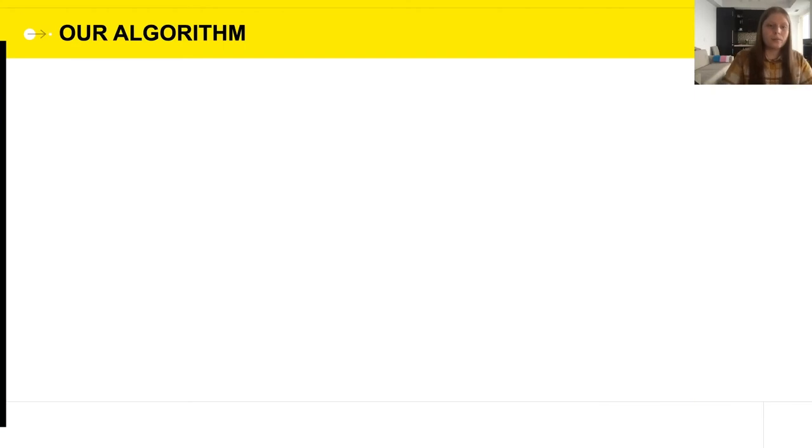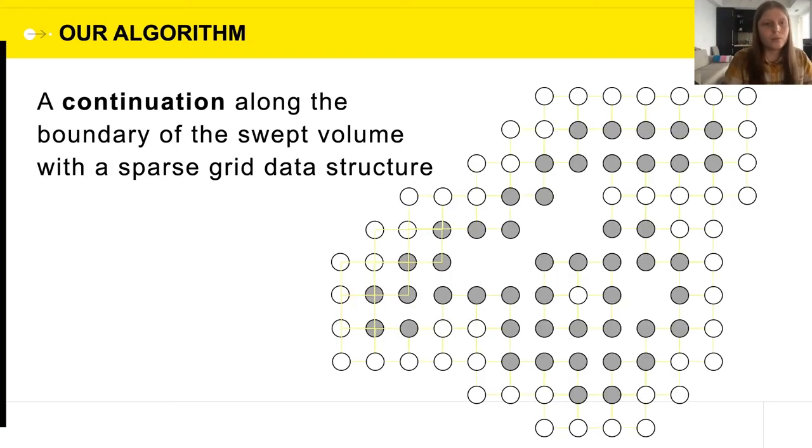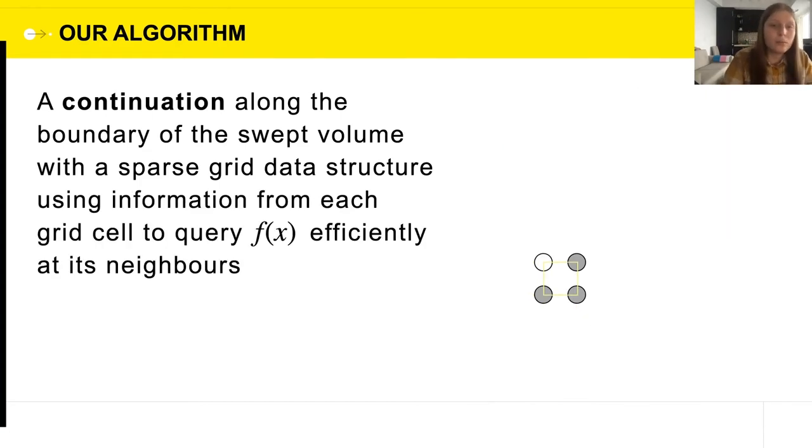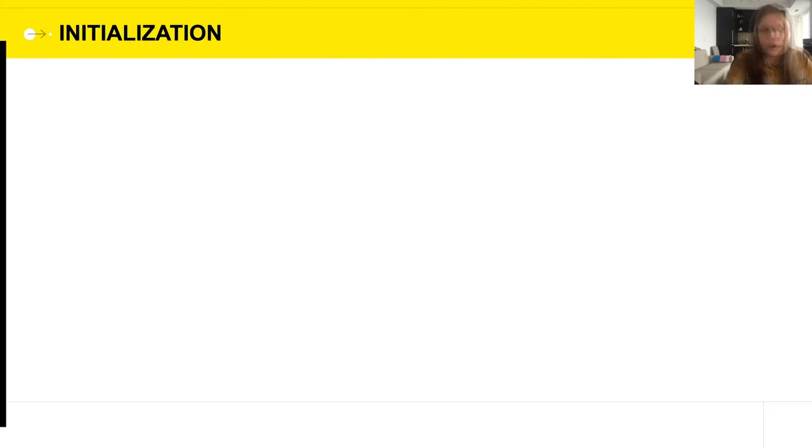So to sum up, the algorithm that we're presenting is a continuation along the boundary of the swept volume with a sparse grid data structure that allows us to compute all the interesting values of f and none of the superfluous ones that are either deep inside the shape or very far from it. We use information from each individual grid cell to query f(x), the function that implicitly describes the swept volume, efficiently at its neighbors.